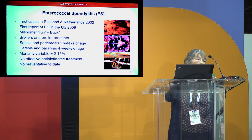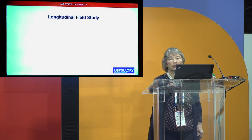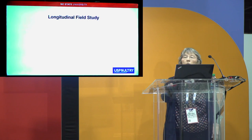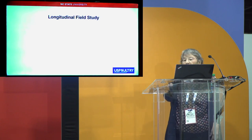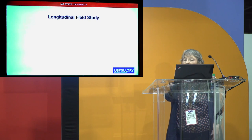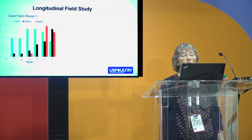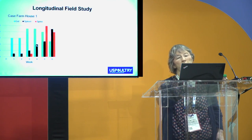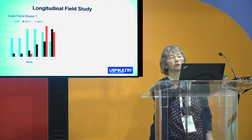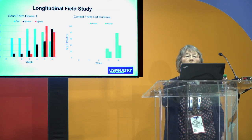The initial question was: did something change in the birds or something change with the bacteria? To answer this, we first did a longitudinal field study, also funded by U.S. Poultry, following affected and unaffected farms for six weeks. We collected gut, spine, and spleens from birds starting in week one and cultured for Enterococcus cecorum. On affected farms, we found positive spleen cultures for E. cecorum already in weeks one and two, and spleen-positive cultures increased over time. By week three we began seeing positive spinal lesions. But on control farms, we couldn't culture E. cecorum until weeks three and four, and only ever found it in the gut.